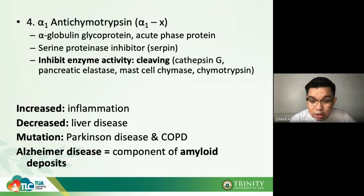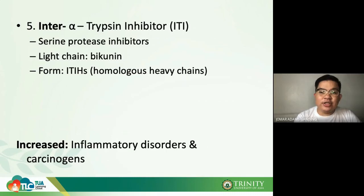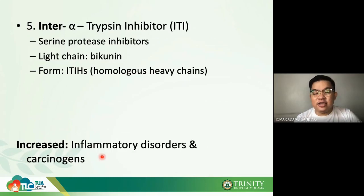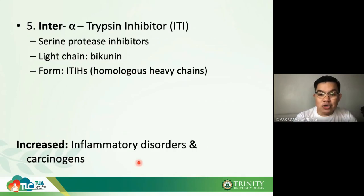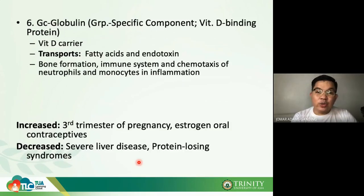The inter-alpha trypsin inhibitor is also a serine protease inhibitor. It has a light chain called bikunin. It is a positive acute phase reactant that increases in inflammatory disorders and in the presence of carcinogens.